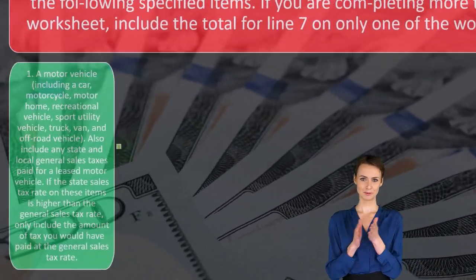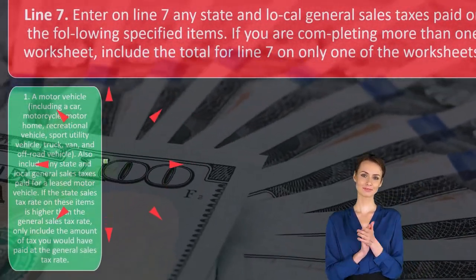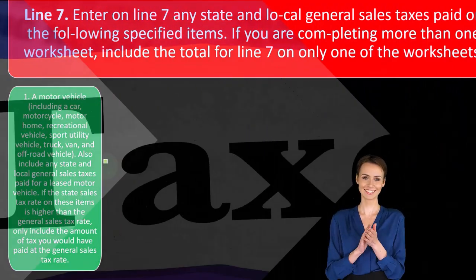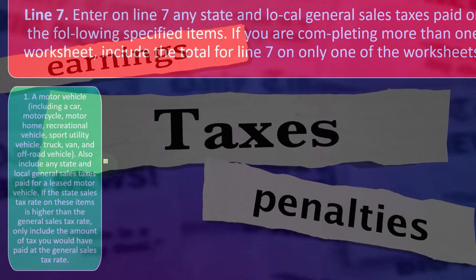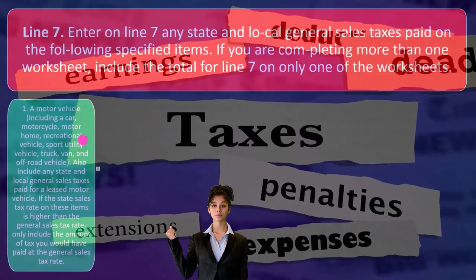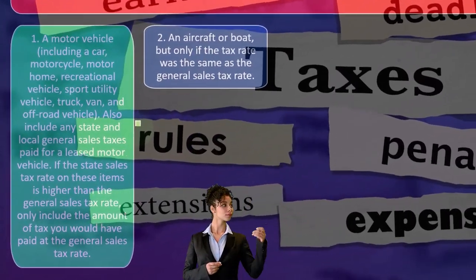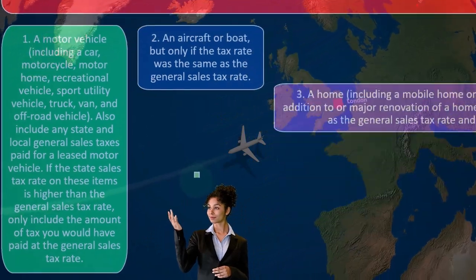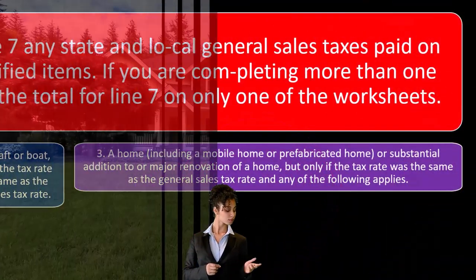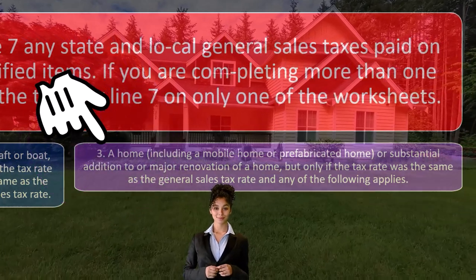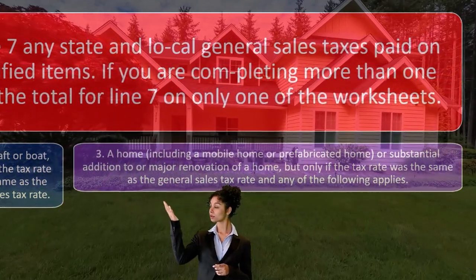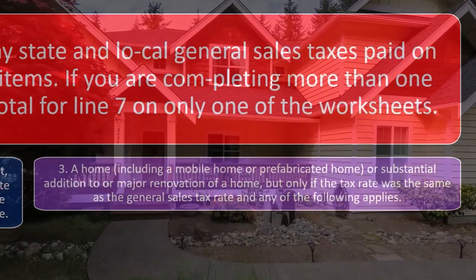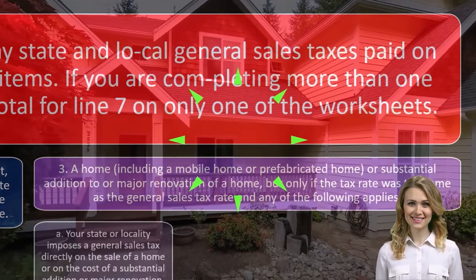If the state sales tax rate on motor vehicles is higher than the general sales tax rate, only include the amount you would have paid at the general sales tax rate. Other specified items include: an aircraft or a boat, but only if the tax rate was the same as the general sales tax rate. Also, a home — including a mobile home or prefabricated home, or a substantial addition or major renovation — but only if the tax rate was the same as the general sales tax rate and certain conditions apply.